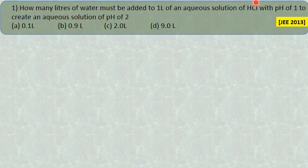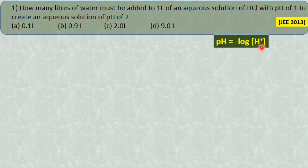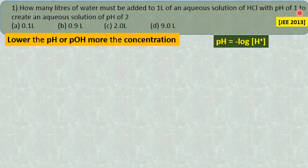So here we have to make a pH 1 solution into a pH 2 solution. pH is equal to negative logarithm of hydrogen ion concentration to base 10. Lower the pH value, higher will be the strength of the material. If the pH value is low, that means it is a concentrated solution. If the pH value is more, that means it is a dilute solution. Similarly, if the pH value is low, the concentration of hydroxyl ion is more in that.